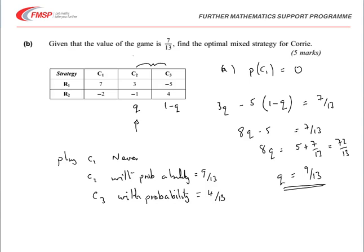The marking for that part, 5 marks available. The marking was as follows: an explanation mark for simply saying that the probability C1 was equal to 0. Then method marks and two accuracy marks for producing the equation and the result for Q 9 over 13. And then finally, an E mark for stating the result.